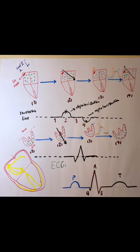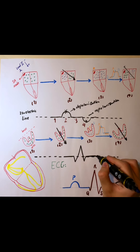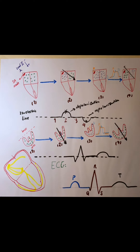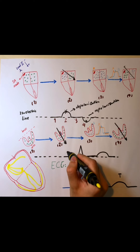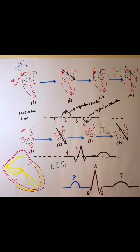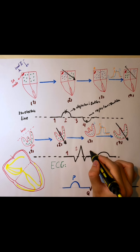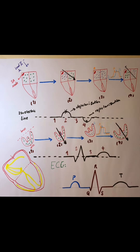Here again we have electric current from negative to positive, which is the same direction as Lead 2. Again we have a positive repolarization wave called the T-wave. So, to number them: first stage, second stage, third stage, and last stage. The repolarization wave in the atria is negative, and the repolarization wave in the ventricles is positive.